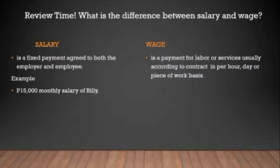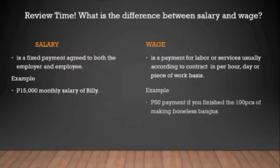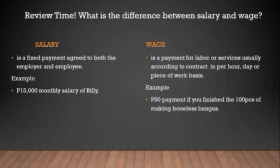Wage, on the other hand, is a payment for labor or services, usually according to a contract on a per hour, day, or piece of work basis. For example, 50 pesos payment if you finish making 100 pieces of boneless bangus. Usually, wage is the term used when the amount of pay changes — because there can be overtime, undertime, or double pay. In other words, wage is a variable income.